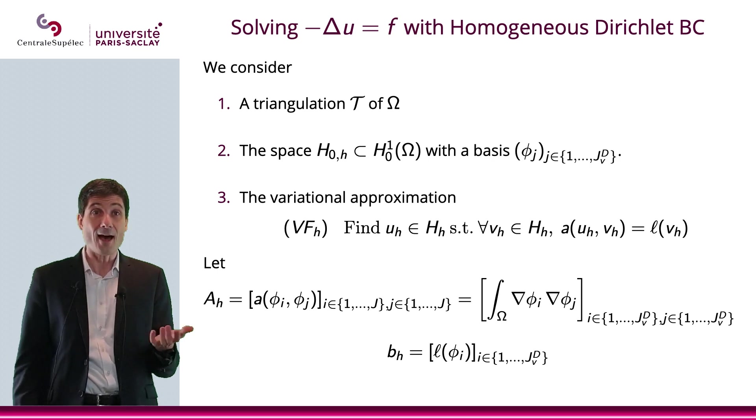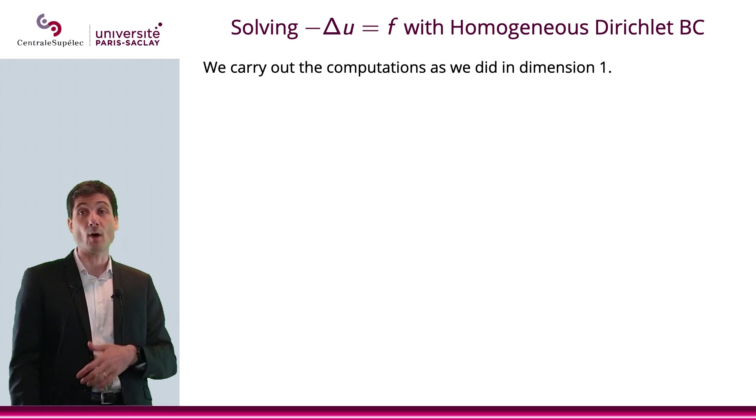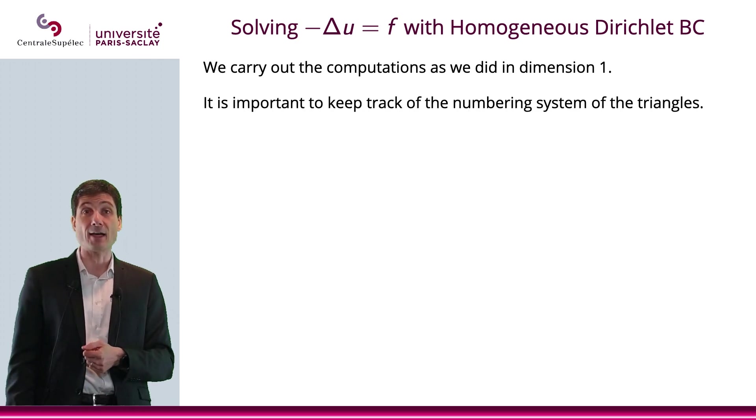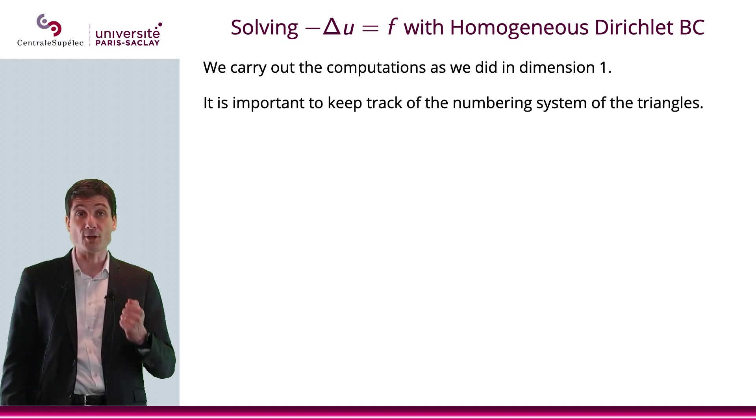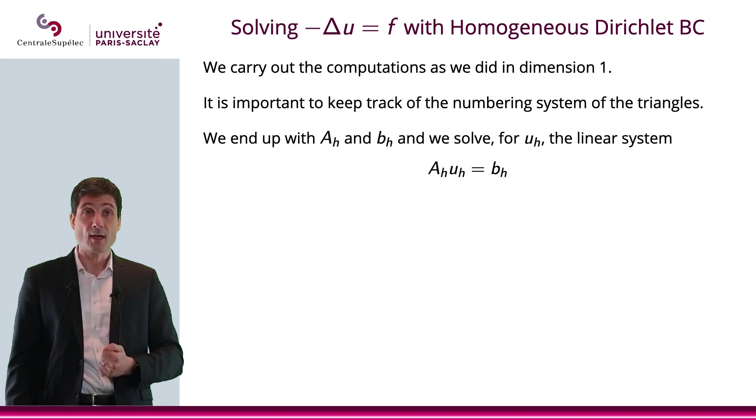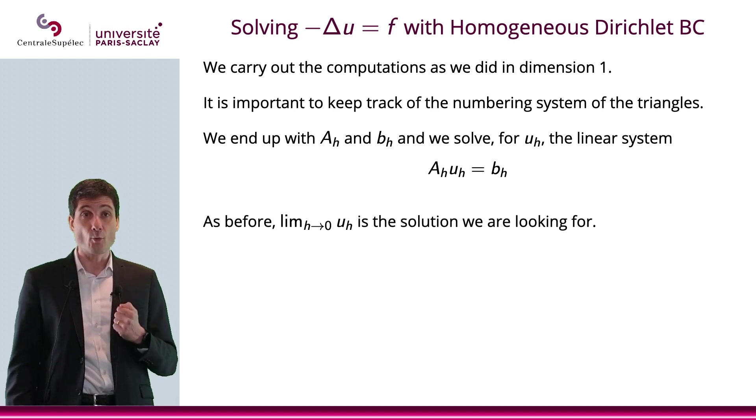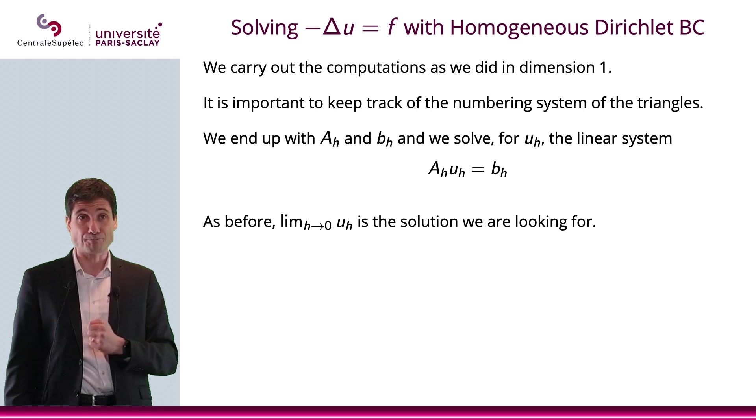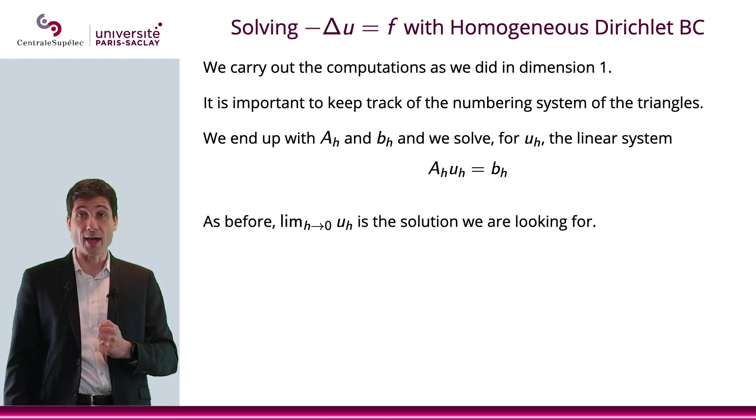Therefore, you have the possibility to carry out the computations exactly the same way as in dimension 1. And you can find the values of U at each node. Of course, it's important to keep track of the numbering system of the triangles. But what happens is that you will eventually reach A, H, U, H equals B, H, which means that you will find U, H. And as before, the limit of U, H will be the solution you're looking for.